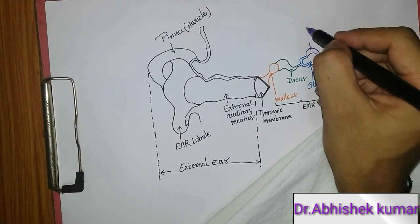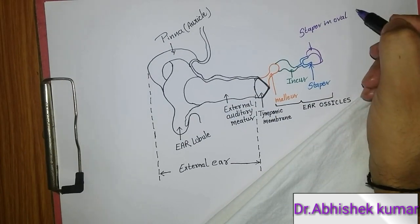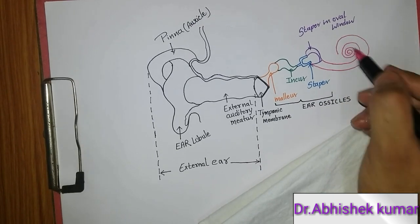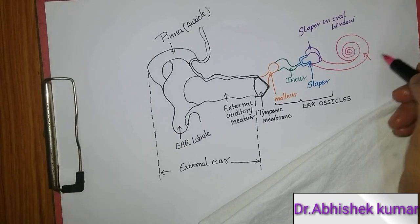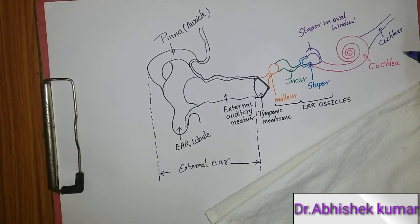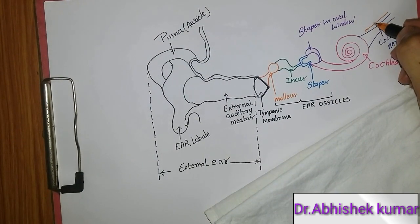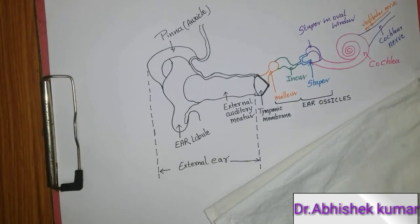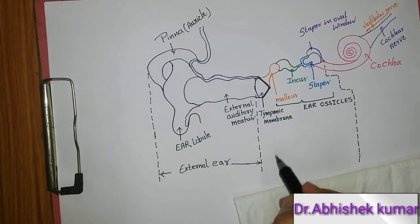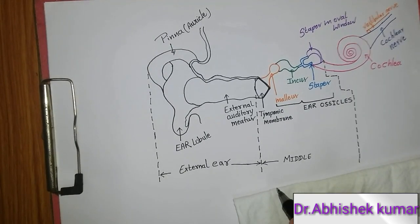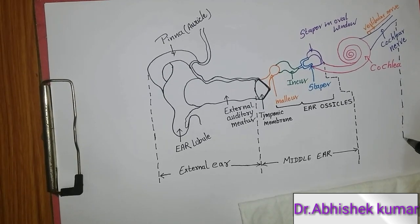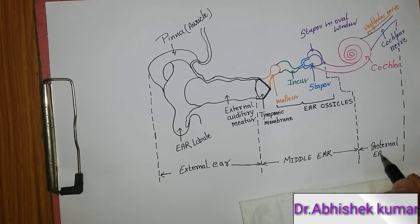I am drawing the stapes in the oval window. With the pink color pen I am making the cochlea — cochlea means snail, it is a snail-shaped fluid-filled coiled tube. This is the cochlear nerve which arises from the cochlea. With the orange pen I am making the vestibular nerve. This line shows the inner ear. The three ear ossicles are present in the middle ear, and the cochlea, vestibular nerve, and cochlear nerve are present in the internal ear.